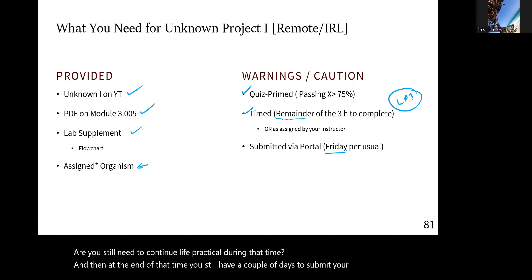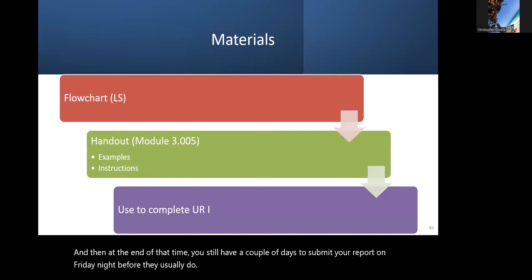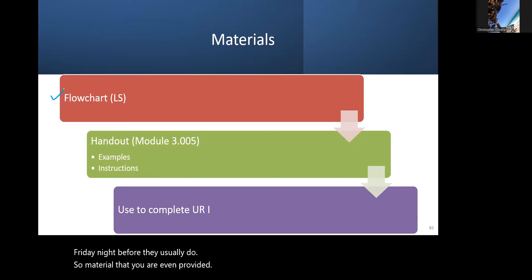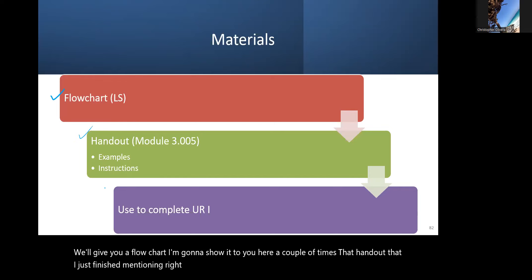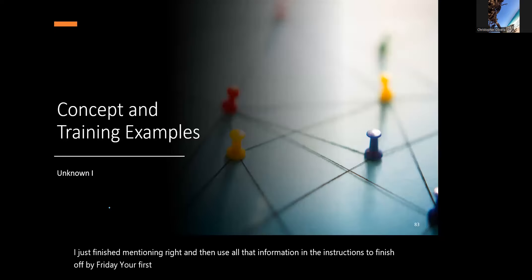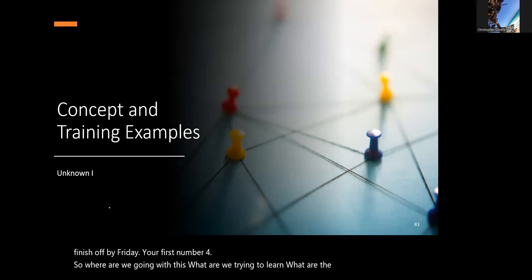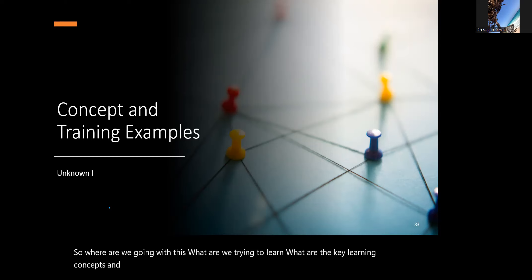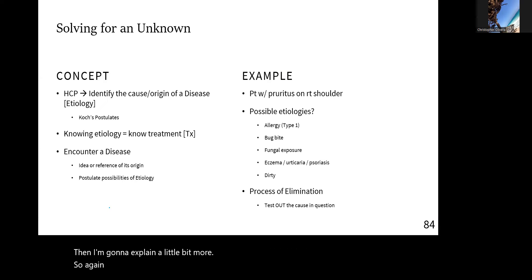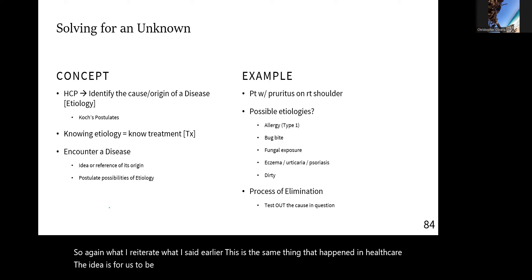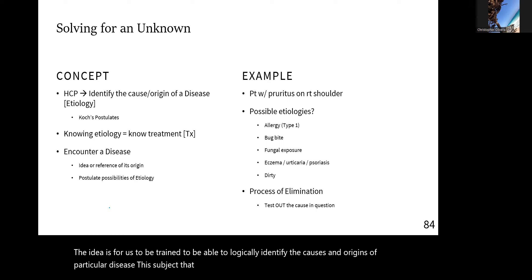At the end of that session you'll still have a couple of days to submit your report, usually due Friday night. Materials already provided include a flow chart — which I'll show you here a couple of times — and the handout. Use all that information and instructions to finish your first unknown report by Friday. The key learning concepts and skills are the KSAs: knowledge, skills, and abilities, which are the same thing that happens in healthcare — training to logically identify the causes and origins of particular diseases, which is etiology.